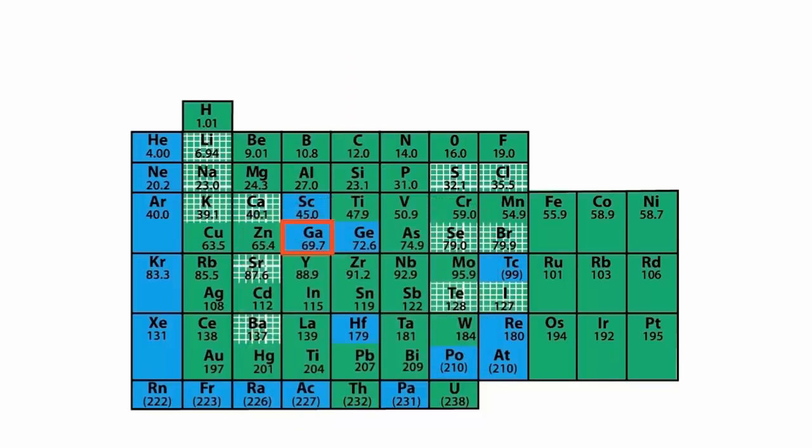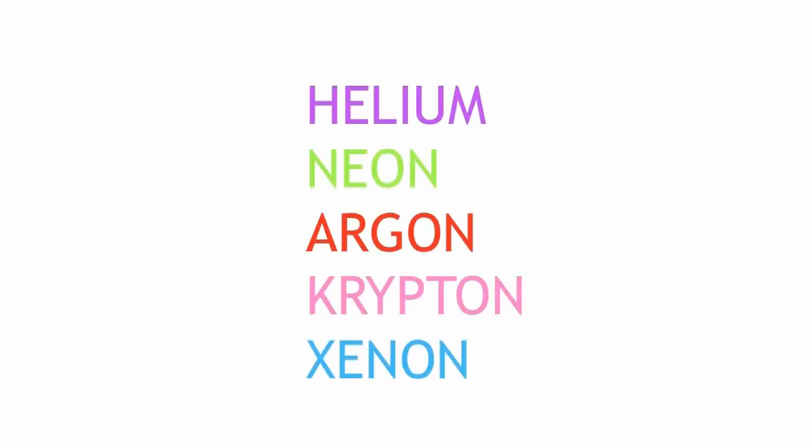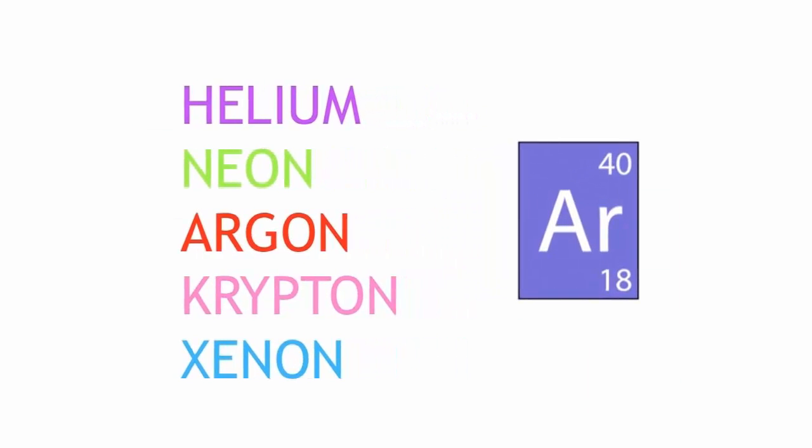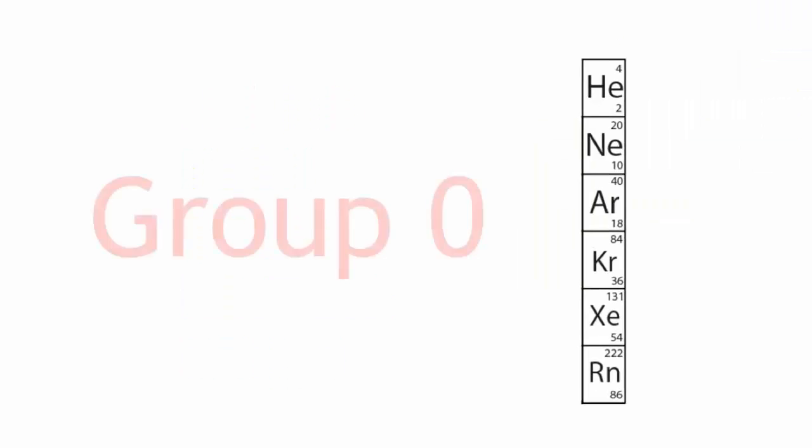His table started to become widely accepted. There were still a few problems with Mendeleev's periodic table. When Mendeleev began drawing up the periodic table, the noble gases hadn't been discovered yet. When argon was discovered, it didn't fit into Mendeleev's table. It was put into a new group, Group Zero.